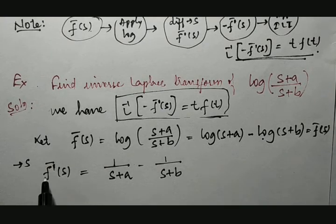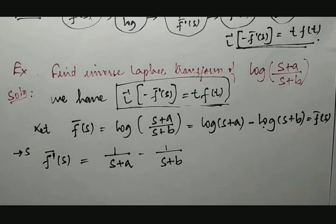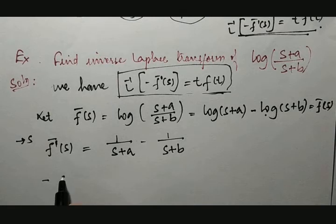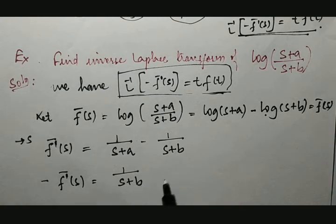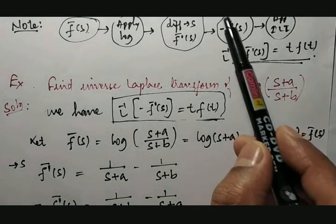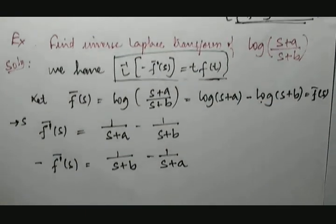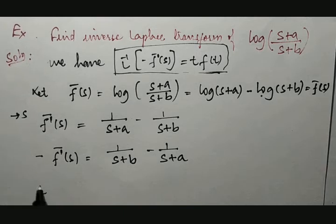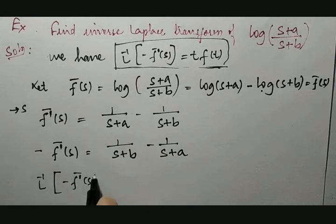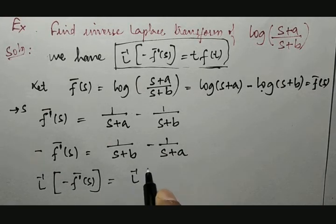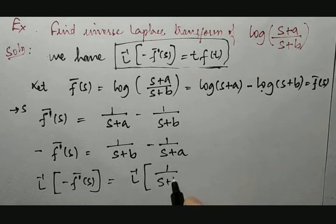Applying a minus sign on both sides: -f̄'(s) = 1/(s + b) - 1/(s + a). Now apply the inverse Laplace transform on both sides: L⁻¹{-f̄'(s)} = L⁻¹{1/(s + b)} - L⁻¹{1/(s + a)}.